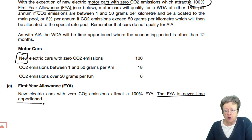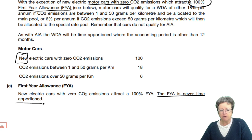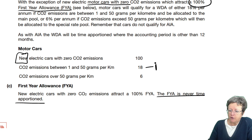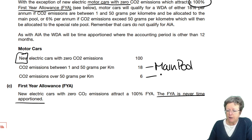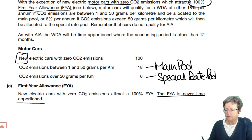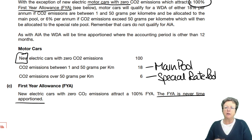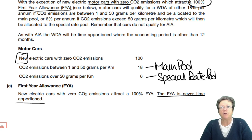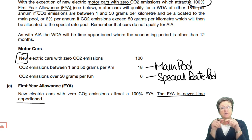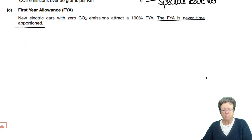For cars, a new electric car gets 100% first-year allowance. If the emissions are between 1 and 50 grams per kilometre, you get 18% and it goes into the main pool. If it's over 50 grams per kilometre, it's only 6% and that goes into the special rate pool. The date you bought the asset is irrelevant — it doesn't matter. As long as the date in the question fits within that accounting period, you never apportion for the length of time you have owned the vehicle.